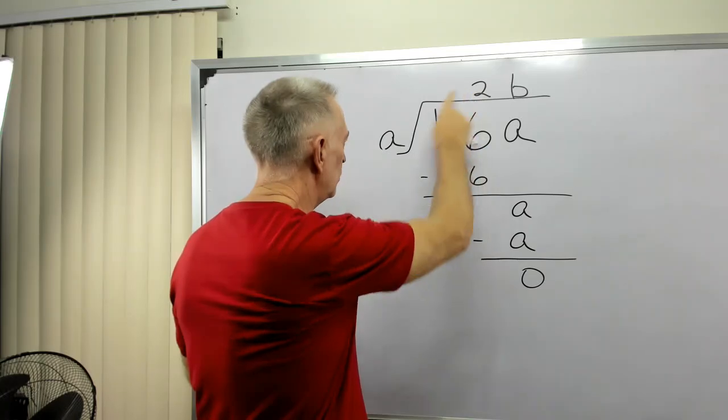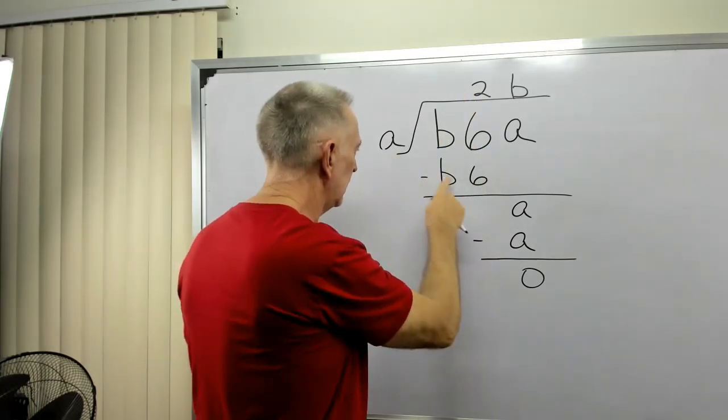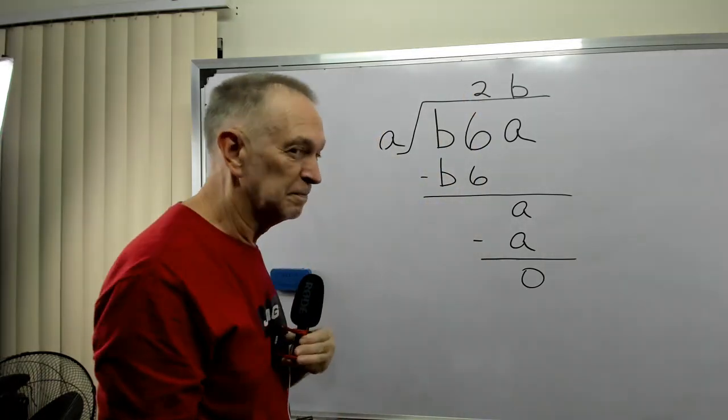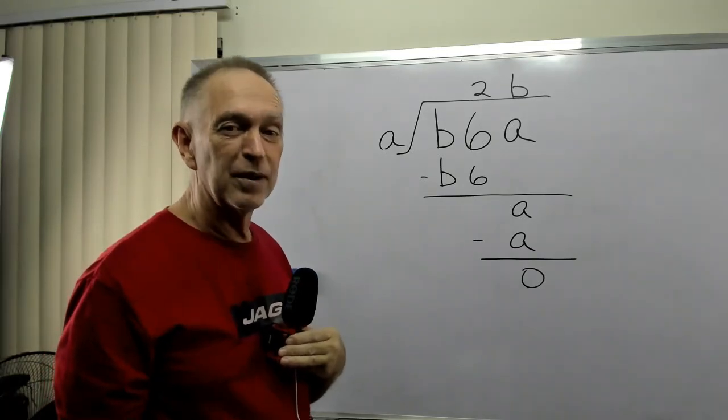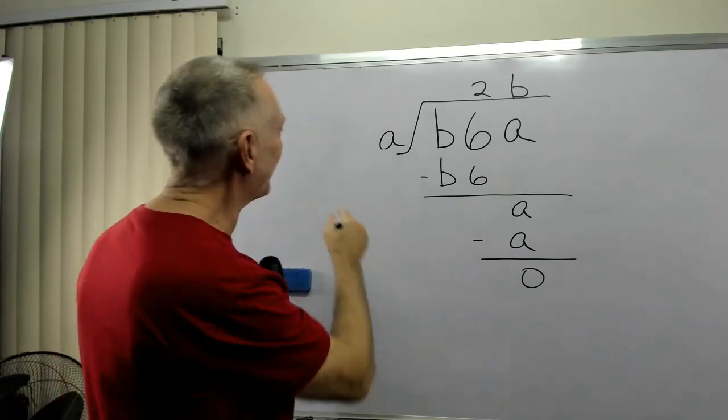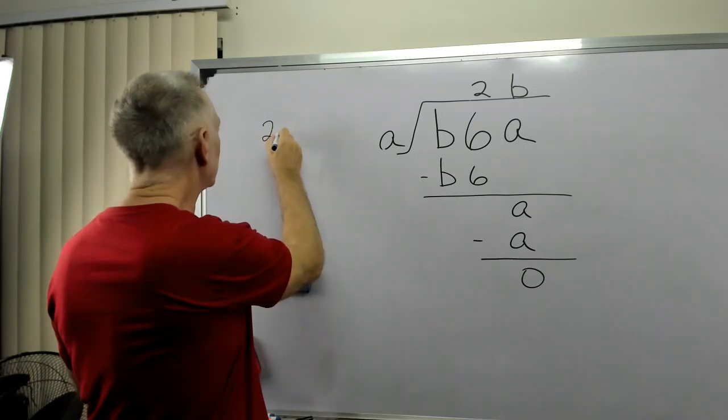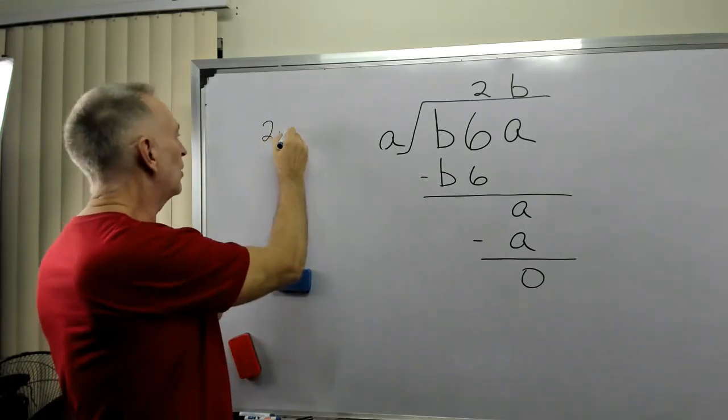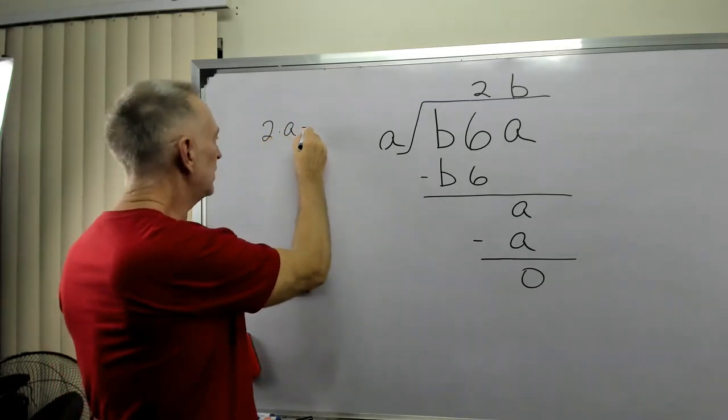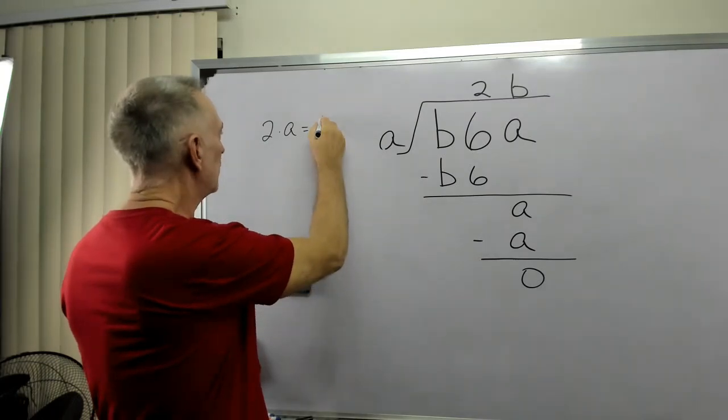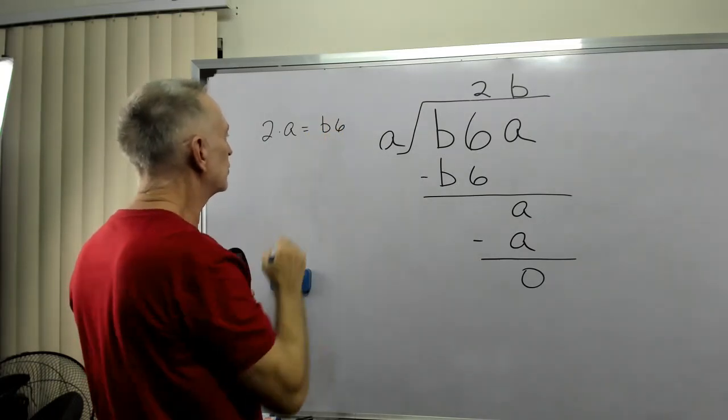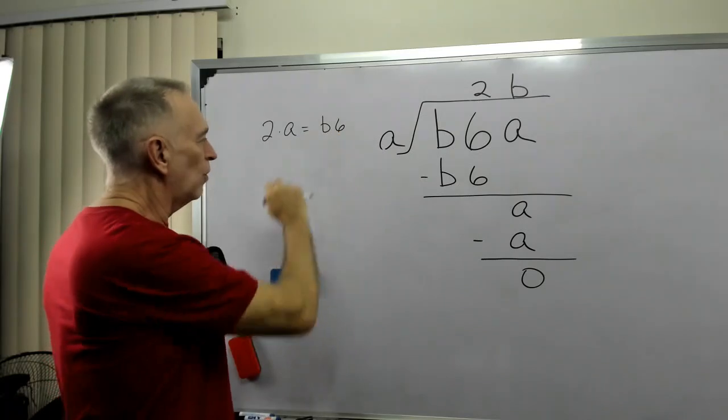2 times A equals B6. That's very informative. I'm going to use a dot for multiplication. 2 times A equals B6. Well, what do I know about this?